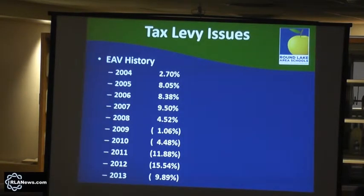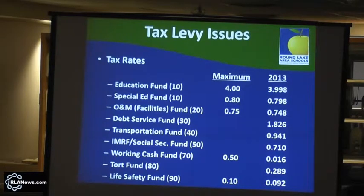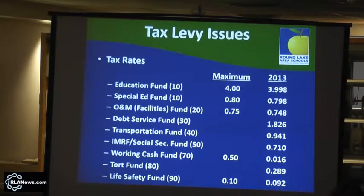Here's the EAB history — as you can see, over the last five years it's gone down. And here are our funds showing those that do have a maximum rate. You can see the education fund is at the $4 maximum — we're right at that. The special ed fund, also in fund 10 — we're right at that. The O&M fund — we're right at the maximum there as well. Our goal is to try to levy as many dollars as possible and not be limited by the maximum.